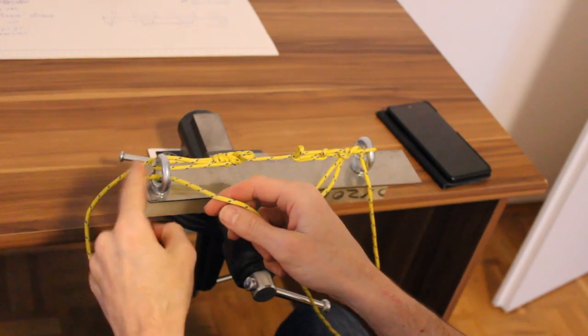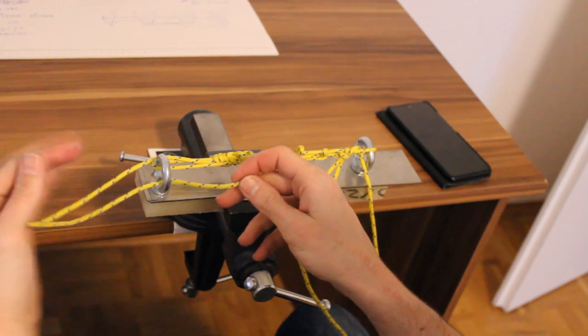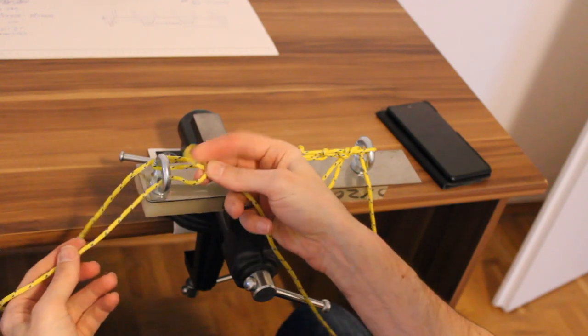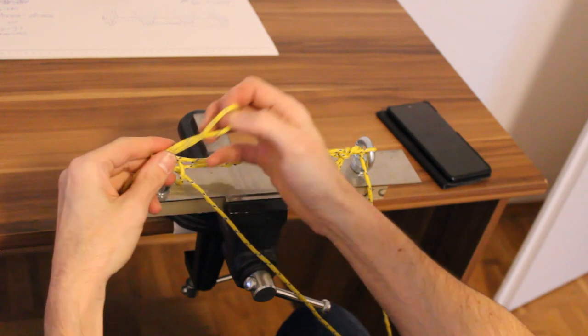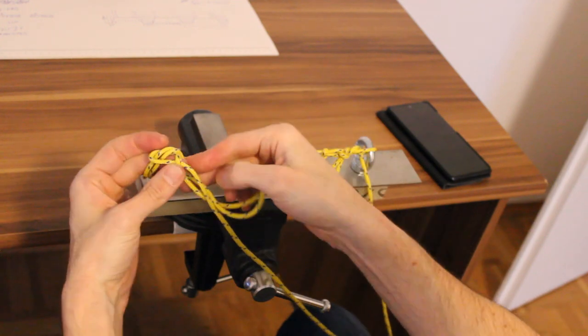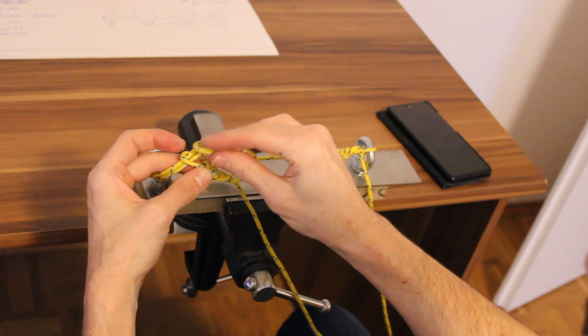And now you want to tie something off with the other end of the rope, then you can do exactly the same thing here. Get a bit of slack there, make a loop for your bowline. Put the ends through, round, and back.